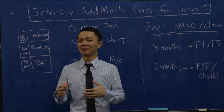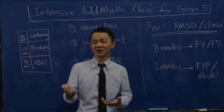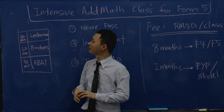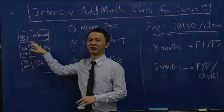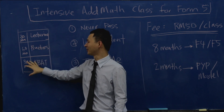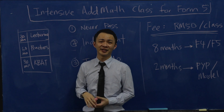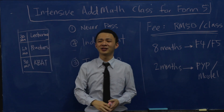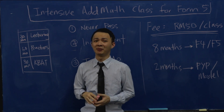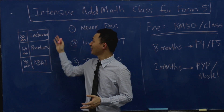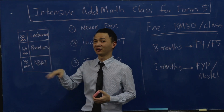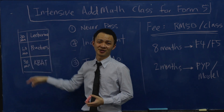Like most tuition centers, my class will be two hours per session, once a week. Here's how I allocate the two hours: about 30 minutes for lecturing, 60 minutes for practice, and 30 minutes to discuss KBAT questions. For the lecturing portion, I will teach you all the knowledge you need to know about the topic and at the same time give you a few examples we will discuss together before practice.